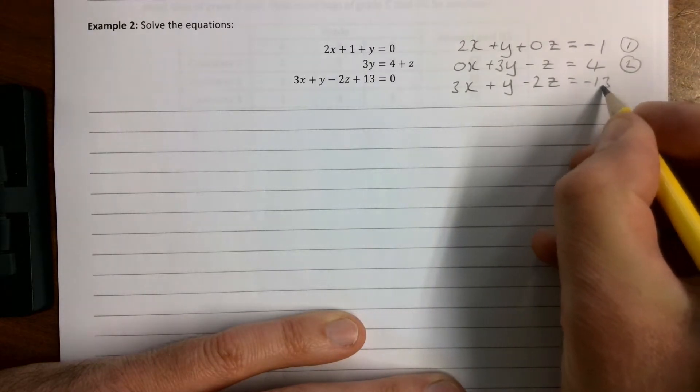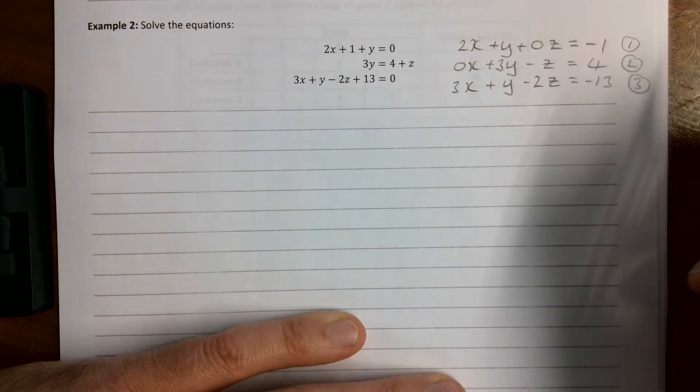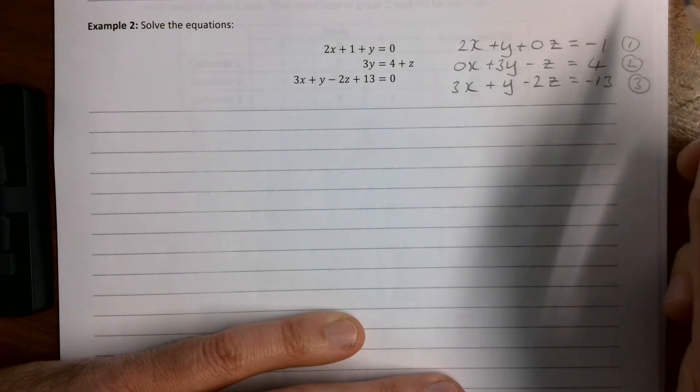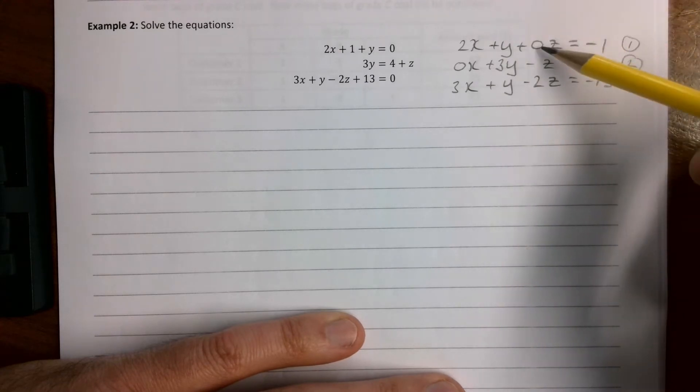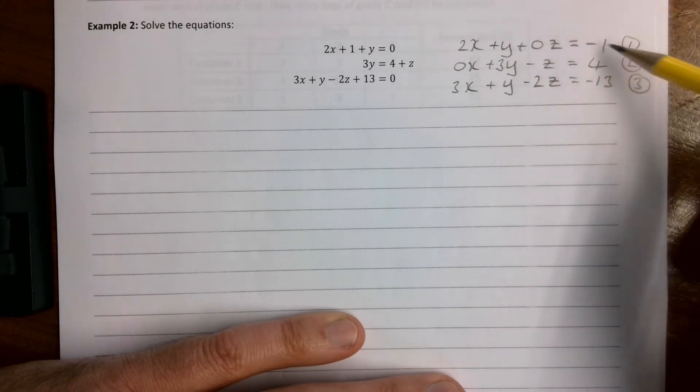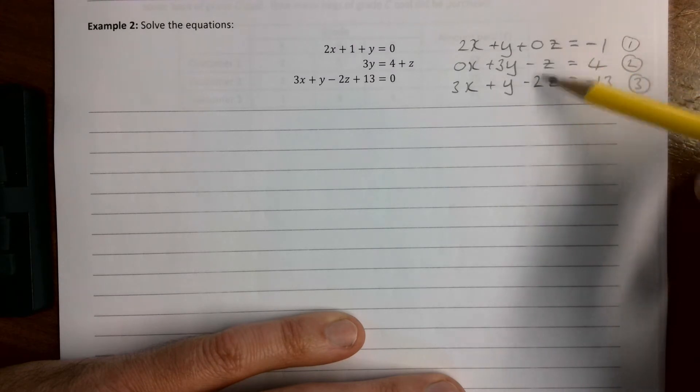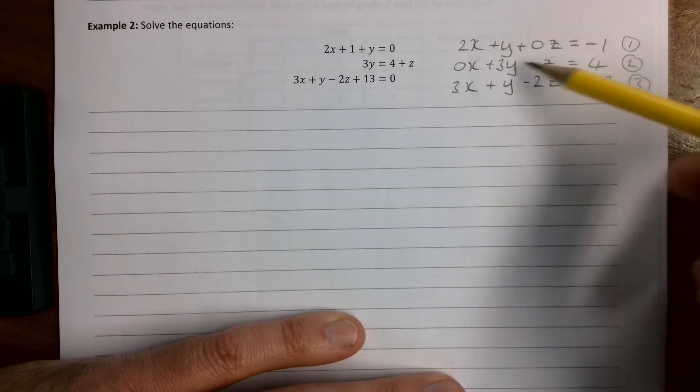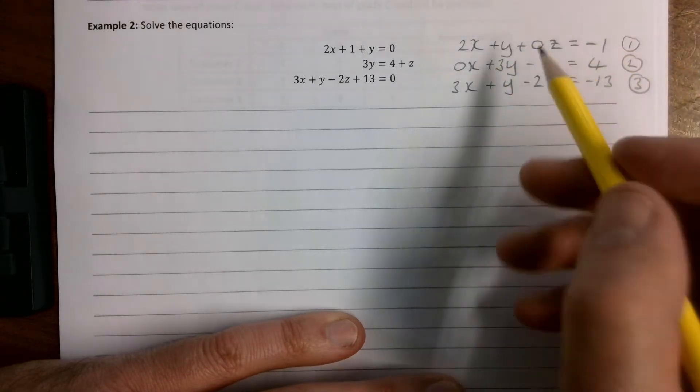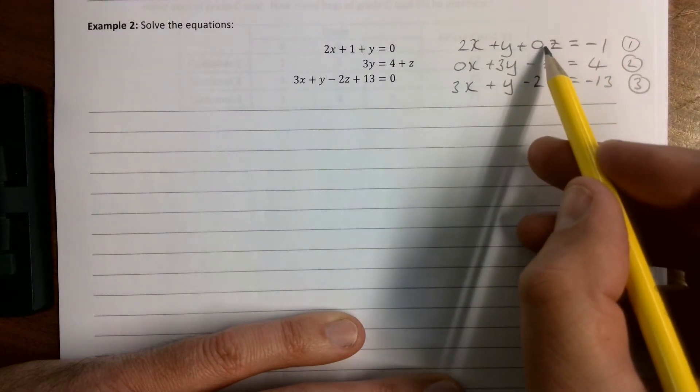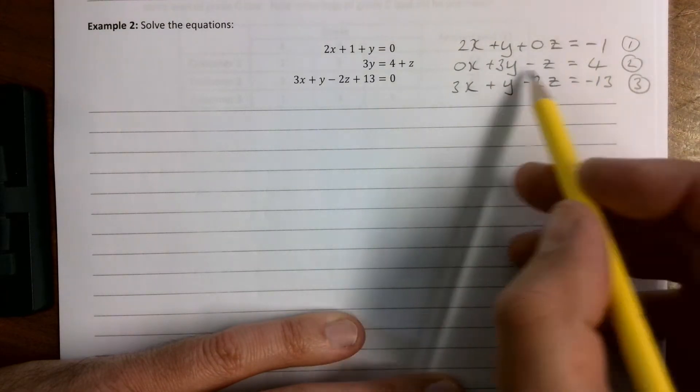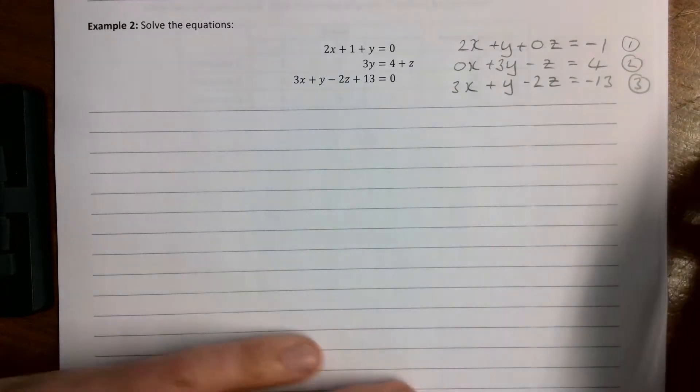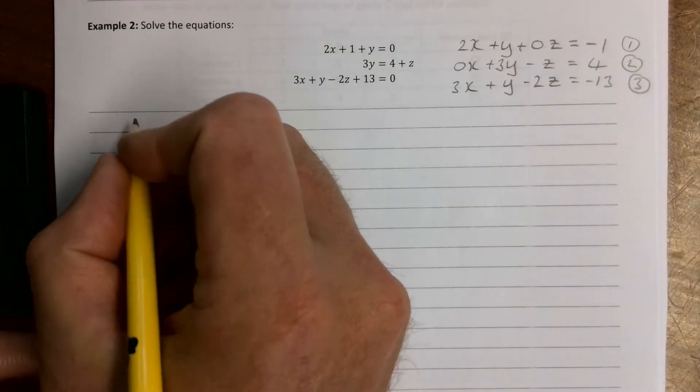We're going to eliminate a letter here. Now do you notice that there's no z already in equation 1, so if we can eliminate the z from the others that saves us a bit of hassle. Our other option is to eliminate the x from this one and this one, because this can almost be like an equation 4 or equation 5. So I'm going to take equation 1 and eliminate z from numbers 2 and 3.